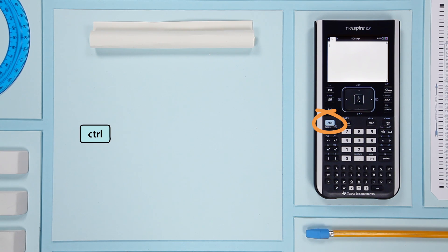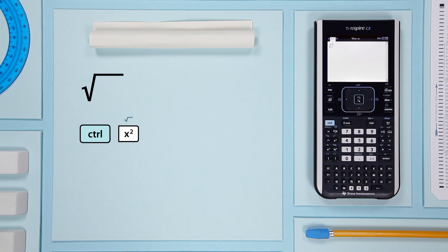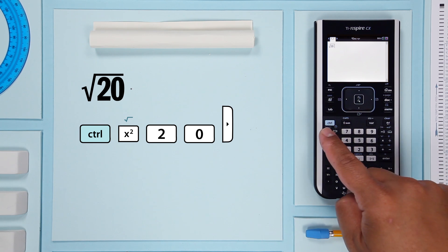Is the square root of 20 equivalent to 2 times the square root of 5? Let's start with the control key. It activates the blue commands over the keys. Press control, square root—it's the blue command over the square key—and 20. Hit the right arrow,